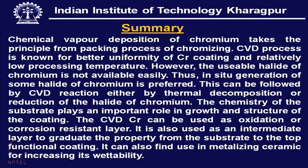Summary: CVD of chromium takes its principle from the pack chromizing process. The CVD process is known for better uniformity of chromium coating and relatively low processing temperature. However, the useful halide of chromium is not easily available, thus in situ generation of some halide of chromium is preferred. This can be followed by CVD reaction either by thermal decomposition or reduction of the halide. The chemistry of the substrate plays an important role in growth and structure of the coating. CVD chromium can be used as an oxidation or corrosion resistant layer, as an intermediate layer to graduate the property from the substrate to the top functional coating, and for metalizing ceramic to increase its wettability.